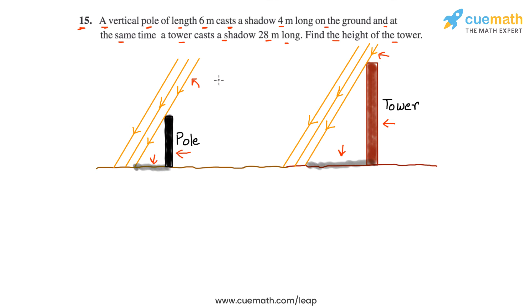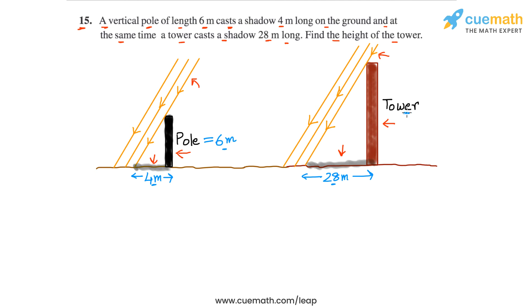The problem tells us that the height of the pole is 6 meters and the shadow cast by the pole is 4 meters long. At the same time, this tower — whose height we don't know — is casting a shadow that is 28 meters long. Using these three numbers — 4 meters, 6 meters, and 28 meters — we have to find the height of the tower.